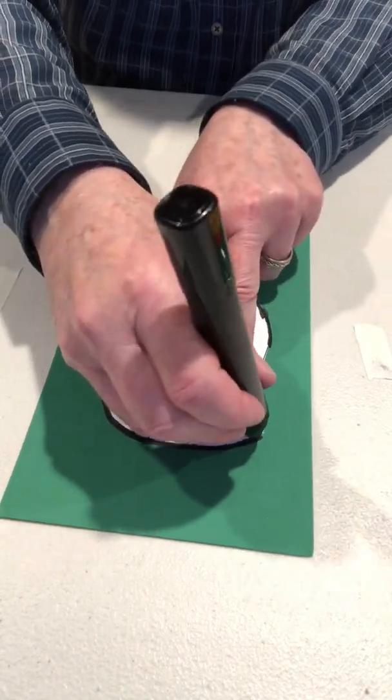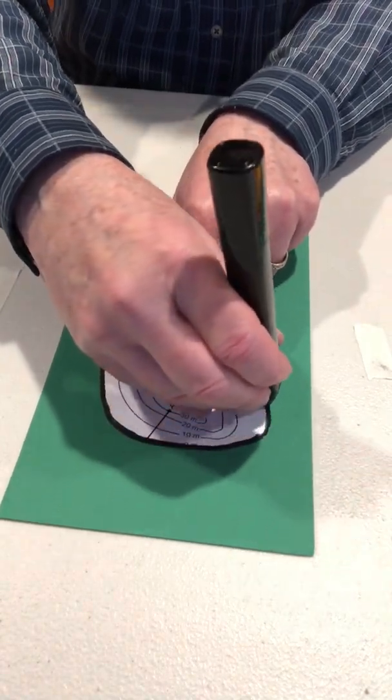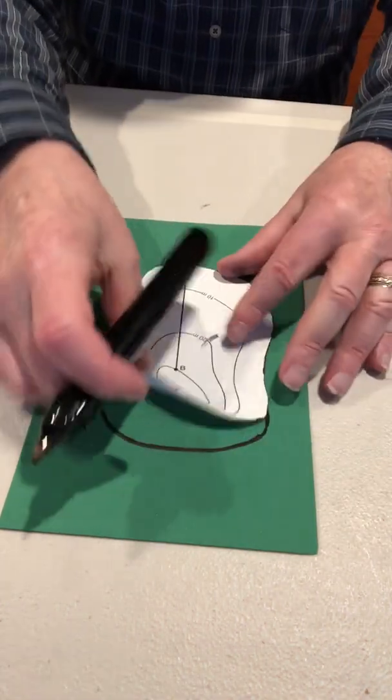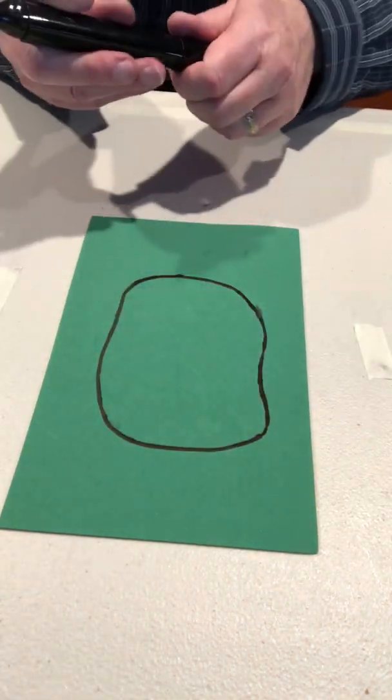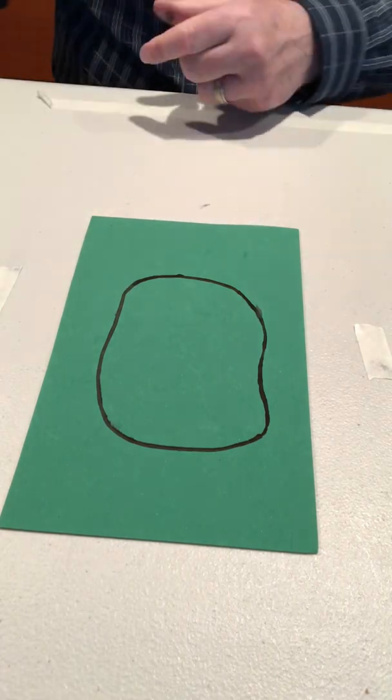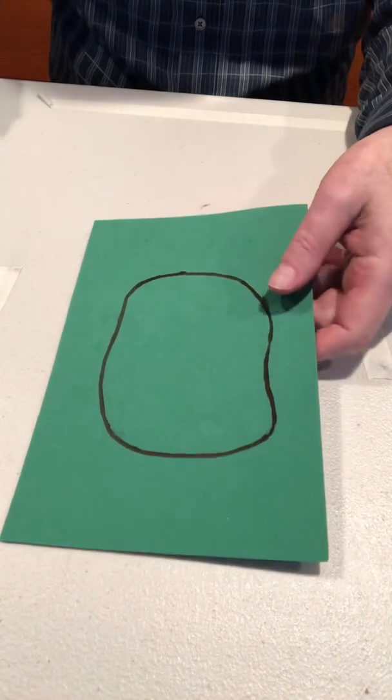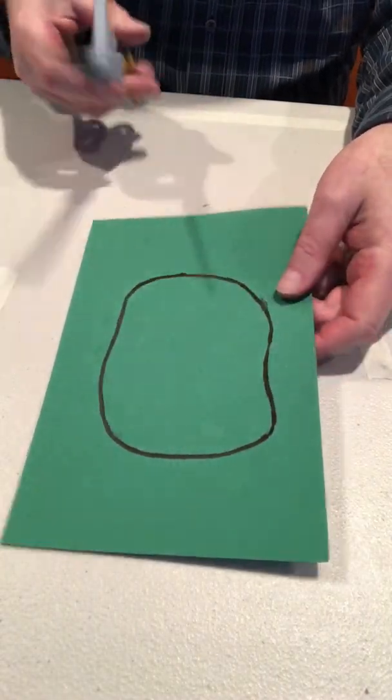It's okay if the piece of paper gets marked up because that's not going to be used again. So now I have the outline of the zero meter contour line, so now I'm going to cut out the piece.